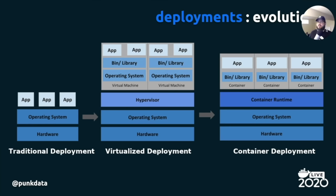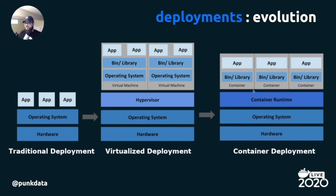Here's a quick diagram about the evolution of deployments. Back in the day, we would have an app running on hardware — application, operating system, then hardware. The problem was when we needed to scale, we had to physically add hardware, which is expensive. Then the hypervisor came on the scene, providing a way to easily manage resources on that same hardware and run application instances more easily.